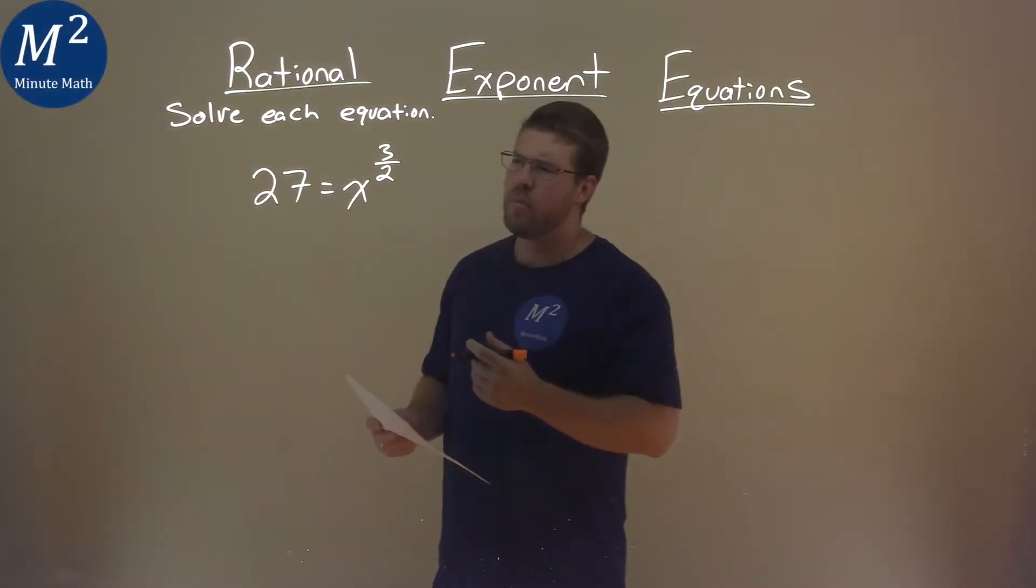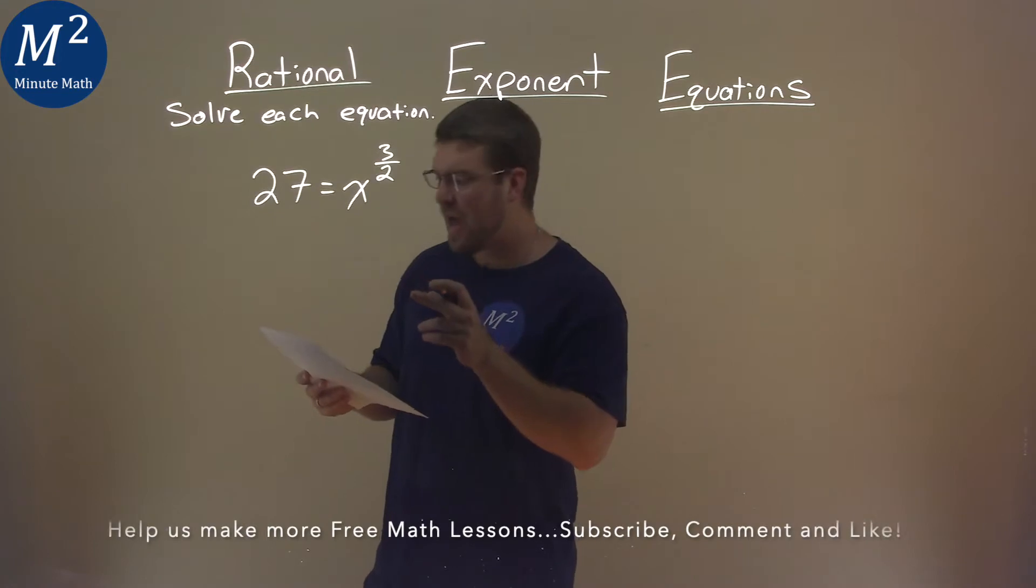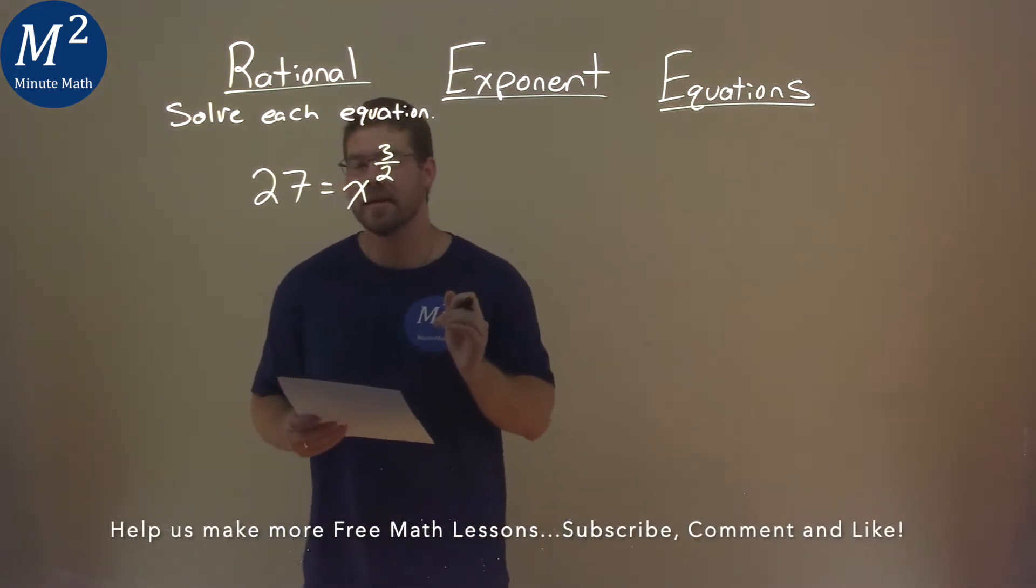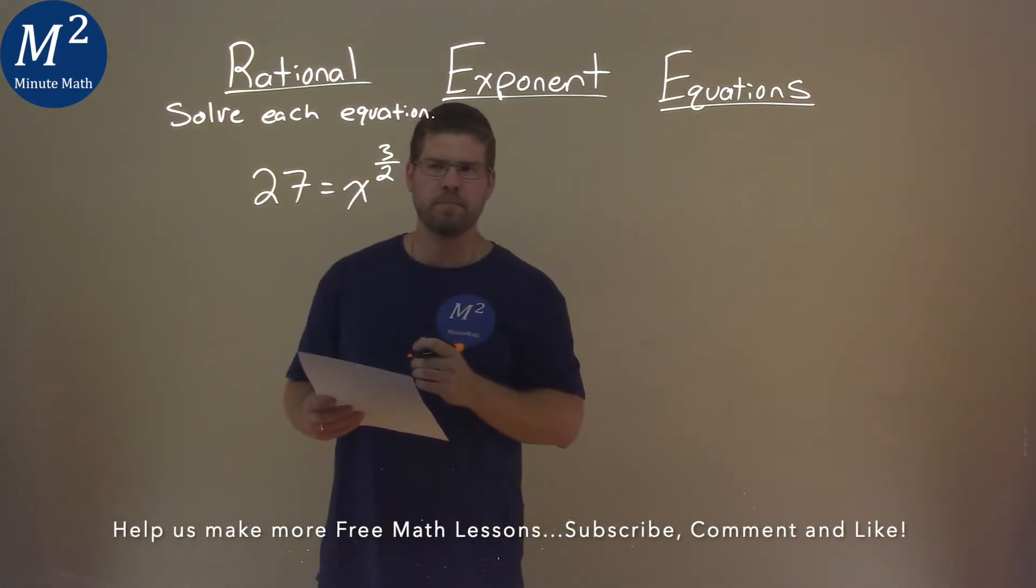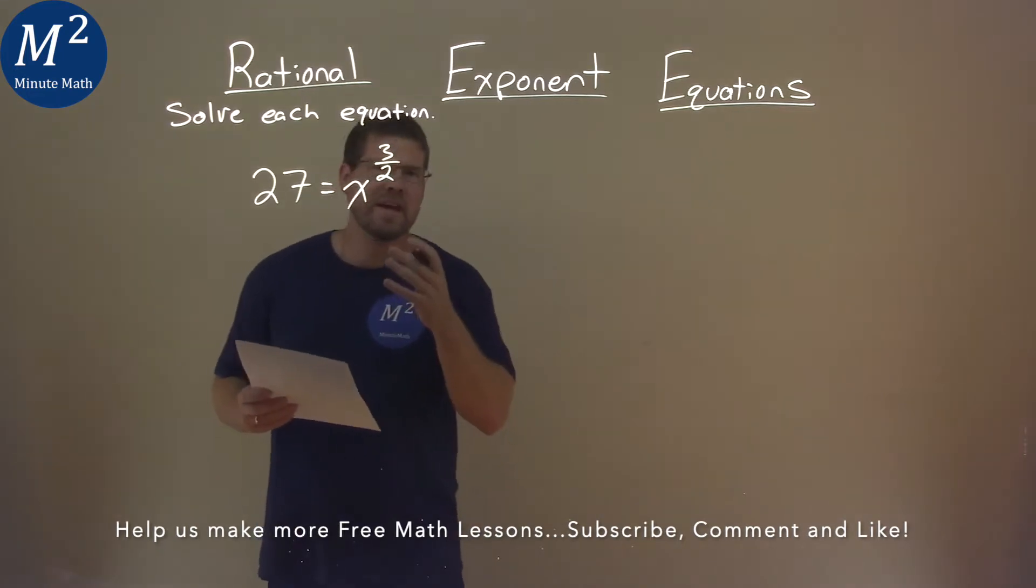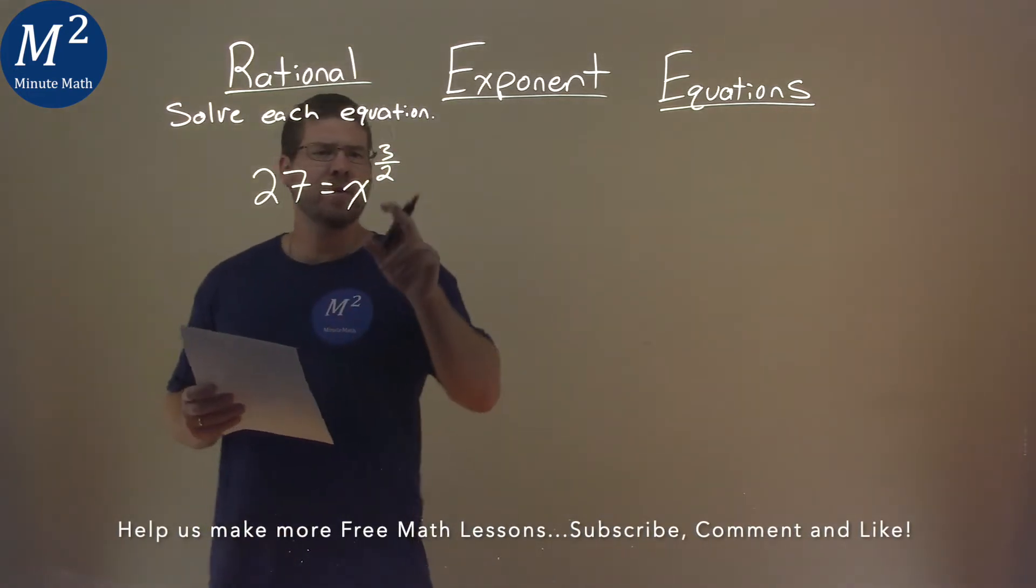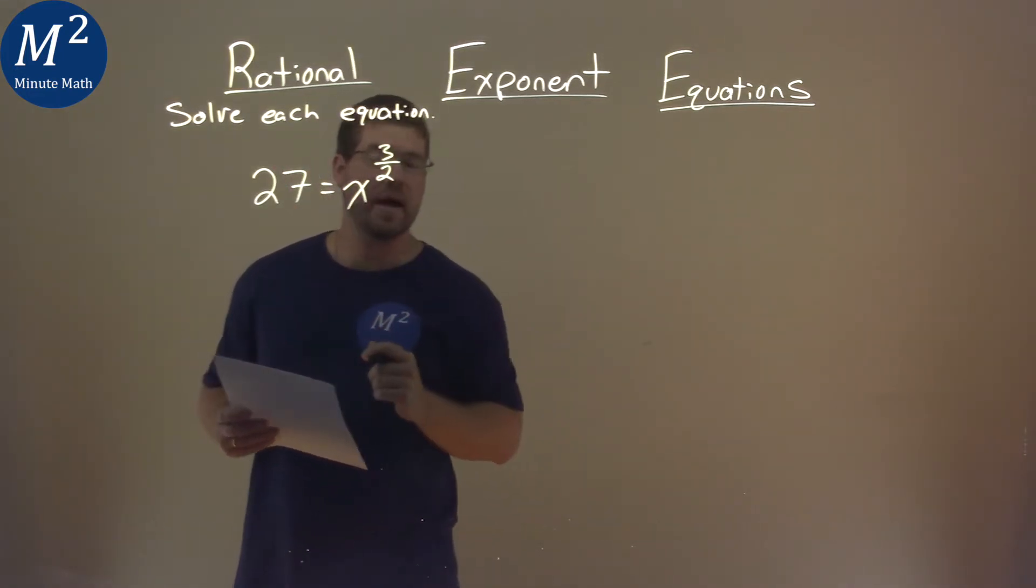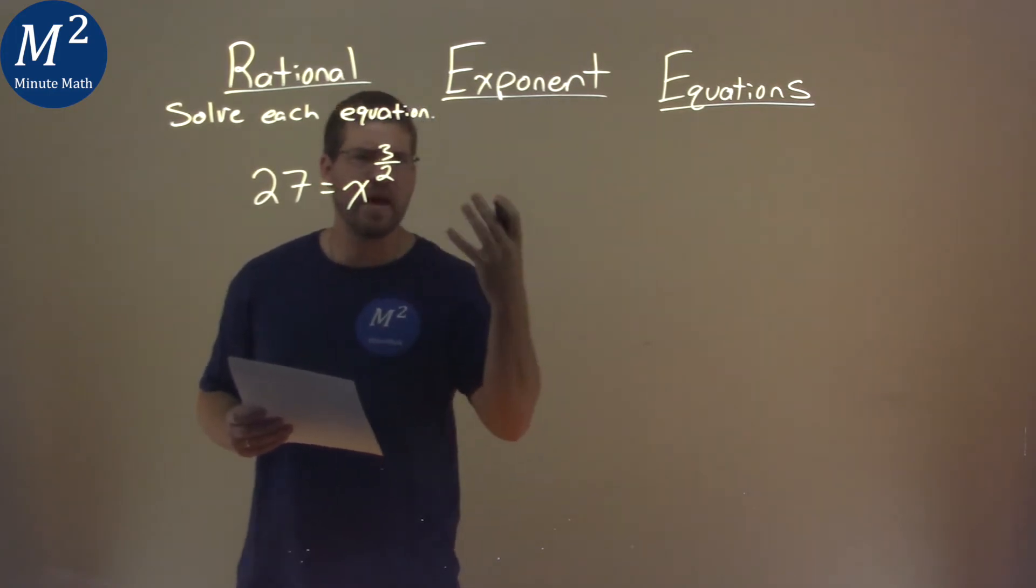We're given this problem right here, 27 equals x to the 3 halves power, and we've got to solve this equation. Well, first thing I like to do here is I notice we have x to the 3 halves power, and we want to get rid of that, get x by itself.